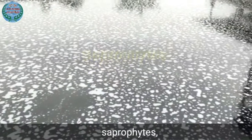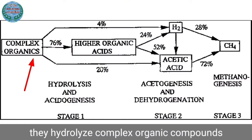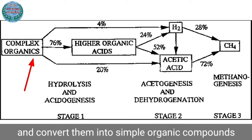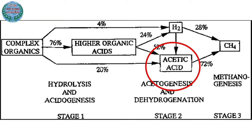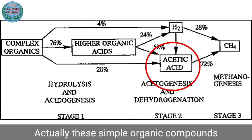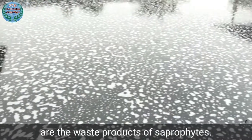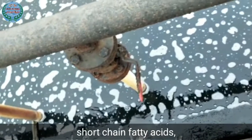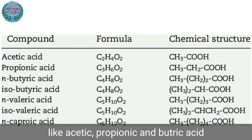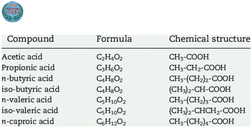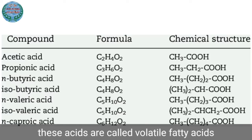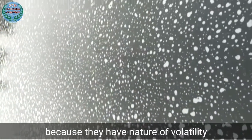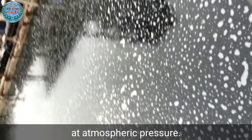Saprophytes hydrolyze complex organic compounds and convert them into simple organic compounds. These simple organic compounds are the waste products of saprophytes. Among these, short-chain fatty acids — acetic acid, propionic acid, and butyric acid — are called volatile fatty acids because they have the nature of volatility at atmospheric pressure.